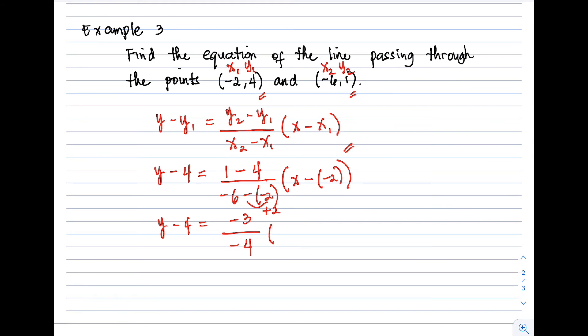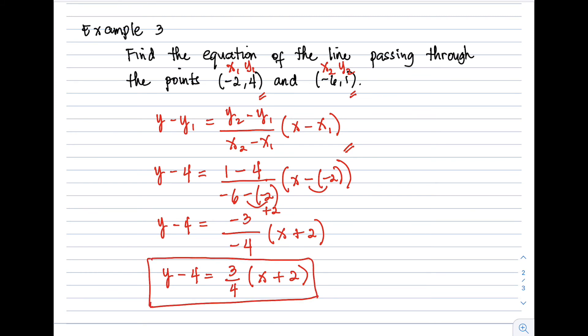Simplifying further: y − 4 = (3/4)(x + 2). This can already be our final answer in point-slope form — this is the equation of the line.